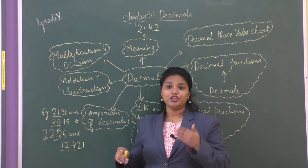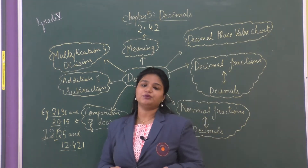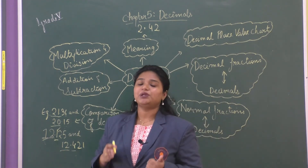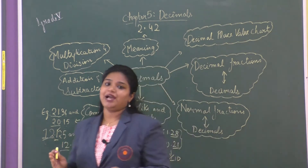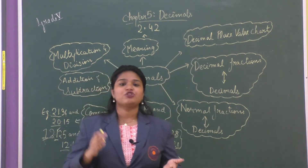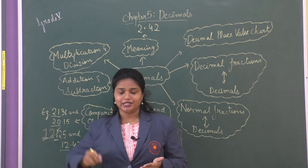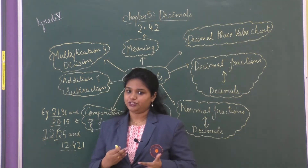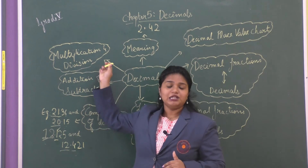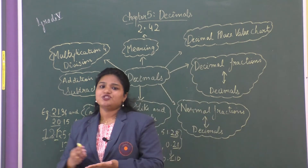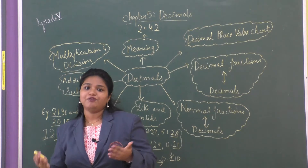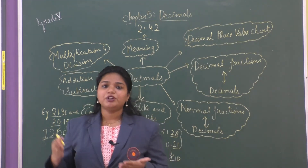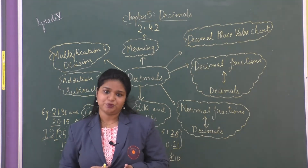Further we learned about operations with decimal numbers. We started with addition and subtraction, and learned that we can only add or subtract like decimals. So if a question gives unlike decimals, first convert them into like decimals and then do the required operation. For multiplication and division, there is no such rule — you can carry forward operations with unlike decimals as well.